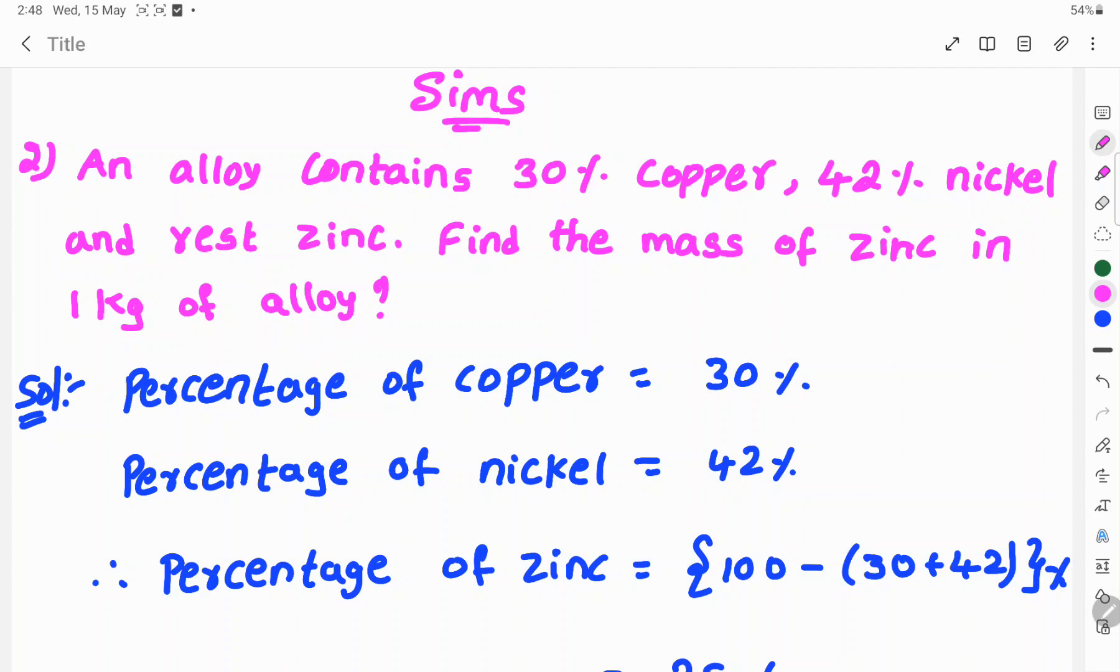Let's see the solution. Given that the percentage of copper is 30% and the percentage of nickel is 42%.